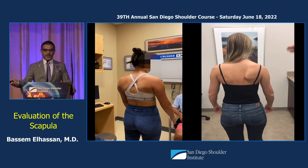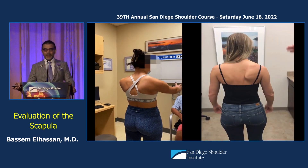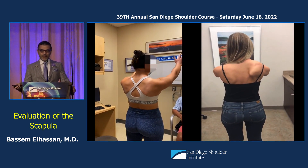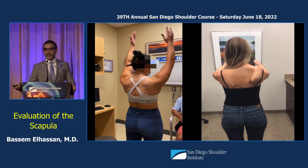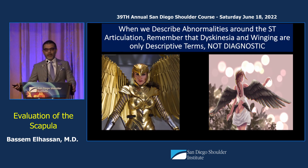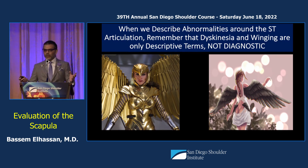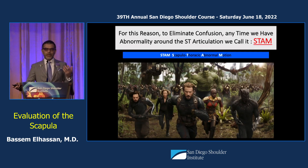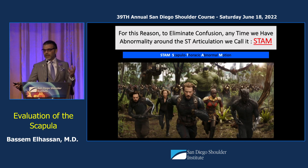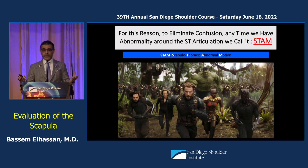When patients present and they have limitation of motion and pain, this is when it becomes pathologic. When we describe abnormality — dyskinesia and winging — sometimes they're confusing in terms of treatment algorithm. For this reason, we came up with the term STEM: scapula thoracic abnormal motion, that will encompass essentially everything.